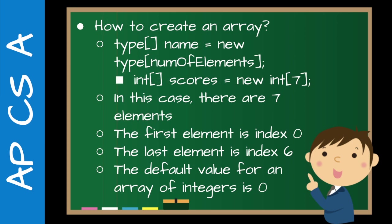So creating an array — you'll see this pattern: type, square brackets, name, equals, new, type, and then the number of elements also in square brackets. For example, `int[] scores = new int[7]`. This tells us there are seven elements; in this case each element is an integer, and the default value would be zero.